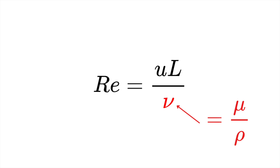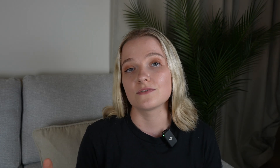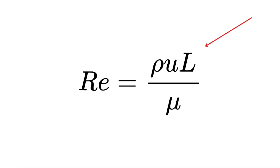The kinematic viscosity is nu equals mu divided by rho. The really beautiful thing about this number is that it tells us the ratio between inertial and viscous forces. The top of the fraction describes the flow itself — things like geometry, velocity, and density — and this can be characterized as the forces which cause the fluid to move.